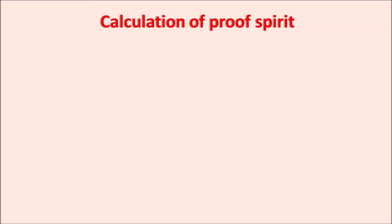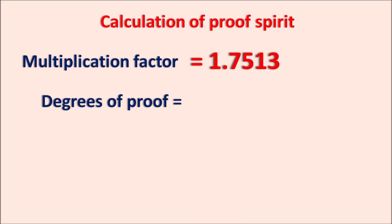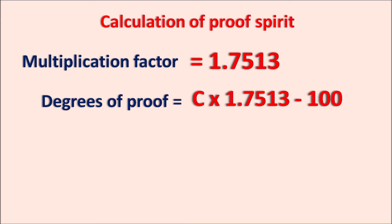The calculation of proof spirit involves very simple steps. Using the multiplication factor of 1.7513, we can calculate: degrees of proof = C × 1.7513 − 100, where C is the concentration of the alcoholic preparation given. The concentration is multiplied by 1.7513 and then 100 is subtracted. Based on the alcohol concentration, this value may be positive or negative, because C × 1.7513 may be either greater than or less than 100.